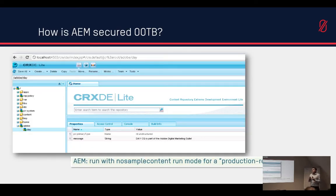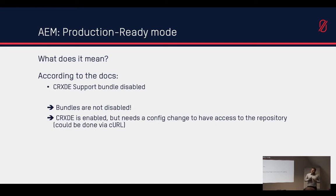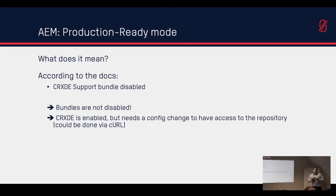AEM comes with the 'no sample content' run mode to make it production ready — no sample content, no sample users, no sample configuration. This is good because often these have exploits; for example, usernames and passwords for the WeRetail users are available on the internet. However, CRX DE's eSupport bundle is listed as disabled in documentation, but when you start AEM with the 'no sample content' run mode, the bundle is not disabled — it's not properly configured. That's a different thing: you can still change the configuration to access the AEM repository (JCR) via a curl command.